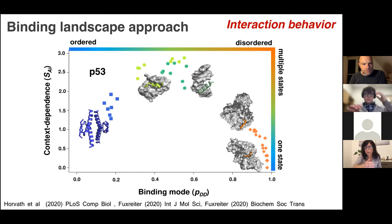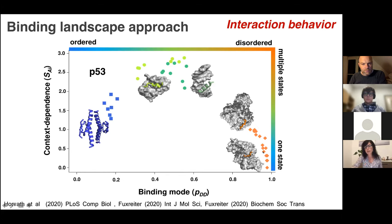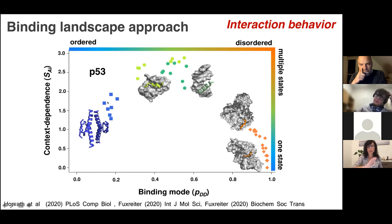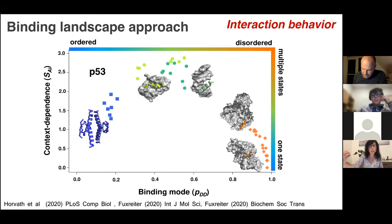Let me make another illustration using a binding landscape approach. You don't only ask about the binding mode; you also ask about context dependence and binding mode diversity. This is now P53. The C-terminal domain really wants to be disordered all the time—very low binding mode diversity and very disordered binding. The oligomerization domain is more ordered but can sample multiple binding modes. The most context-dependent sites are the MDM2 binding site and the DNA recognition helix—they can sample multiple binding modes upon different contexts.